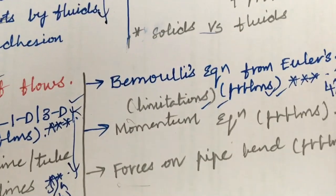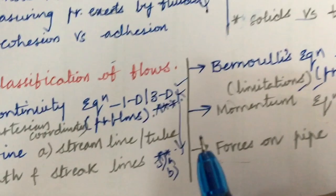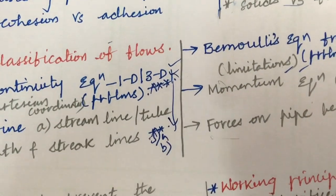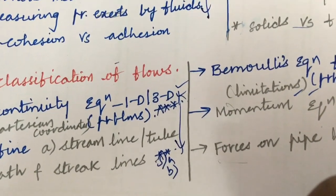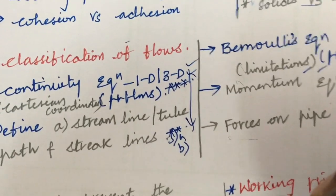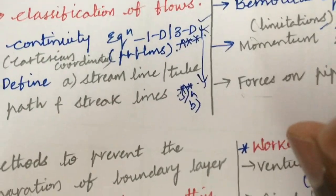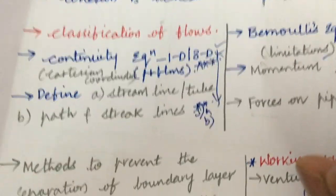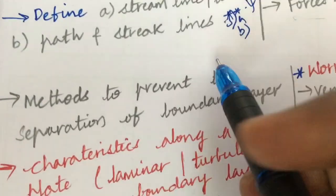As per the COVID exam pattern, 8 questions will be asked, of which you are supposed to work out any 5. Questions from units 1, 2, and 3 will cover 6 questions. I am expecting 2 questions from the 4th unit this time instead of the 3rd unit.